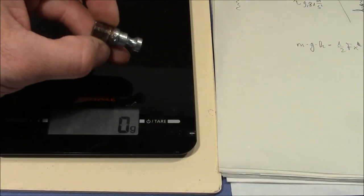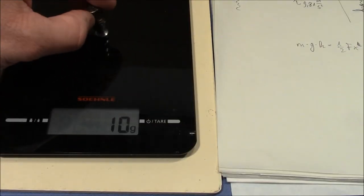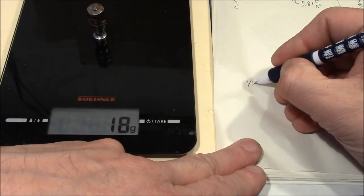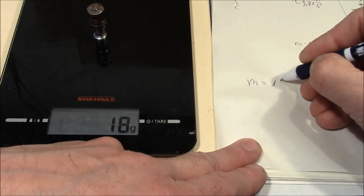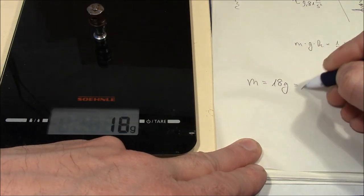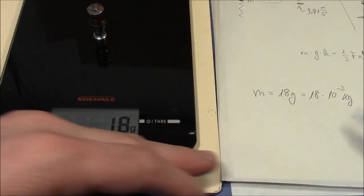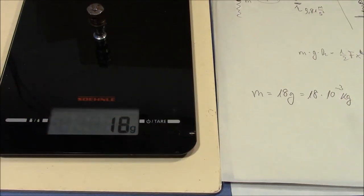Here's my scale and I have the bolt here. I can just put it on the scale and it weighs 18 grams, which is 18 times 10 to the minus 3 kilograms, so I'm always calculating in SI units.